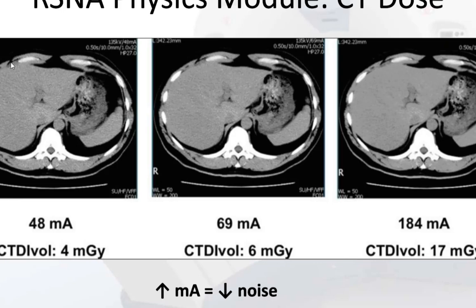The left-sided image is much noisier than the right-sided image. The difference is that the left side has low MA, then average MA, and high MA. The CT-DI volume is also increasing as we increase the MA, and this looks noisy while the high MA image looks smooth with perhaps more information.